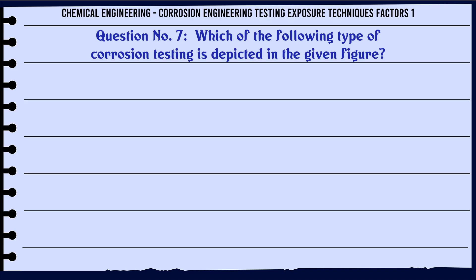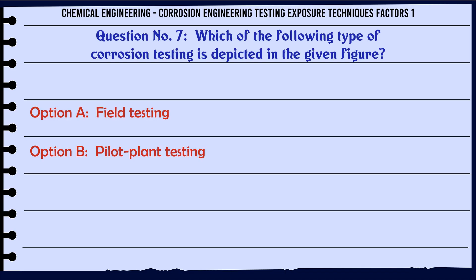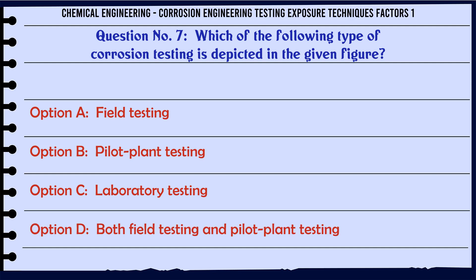Which of the following types of corrosion testing is depicted in the given figure? A. Field testing. B. Pilot plant testing. C. Laboratory testing. D. Both field testing and pilot plant testing.